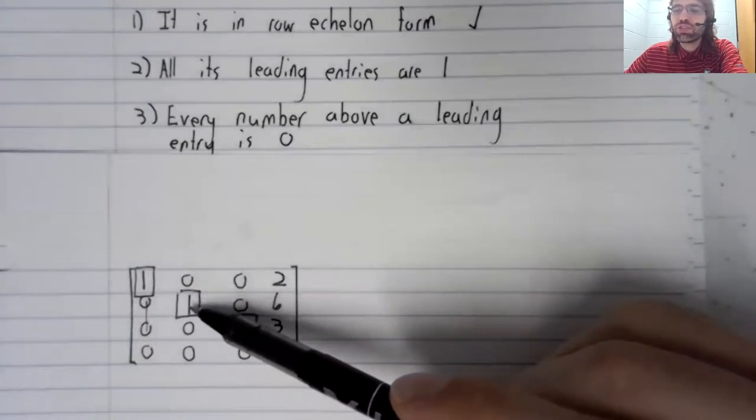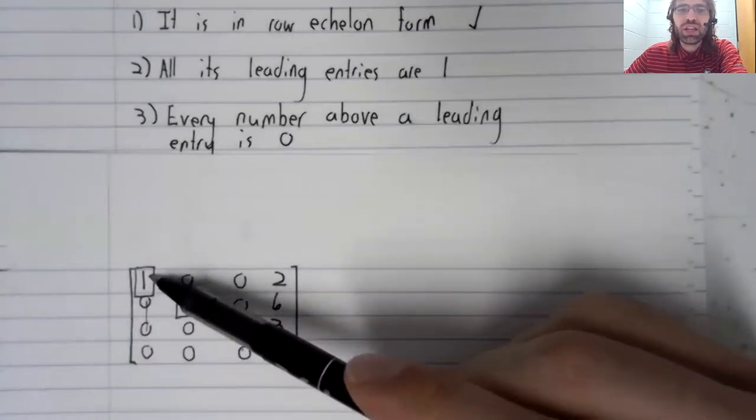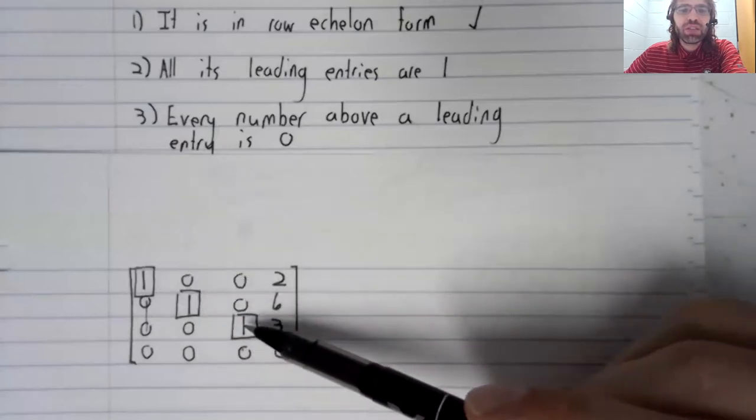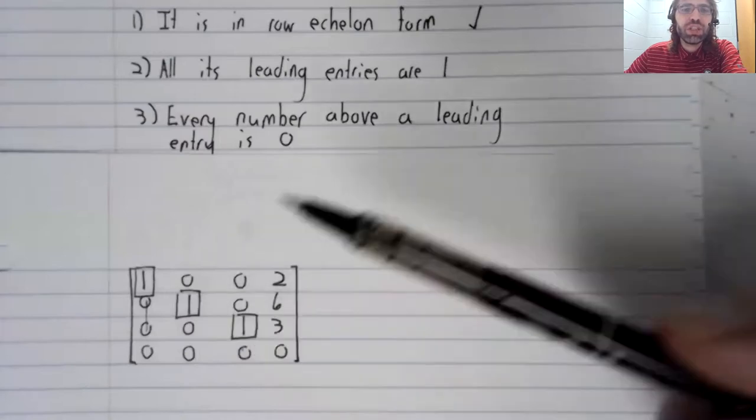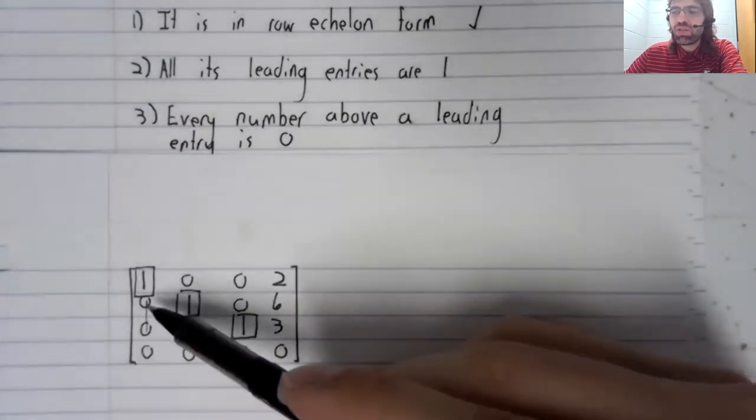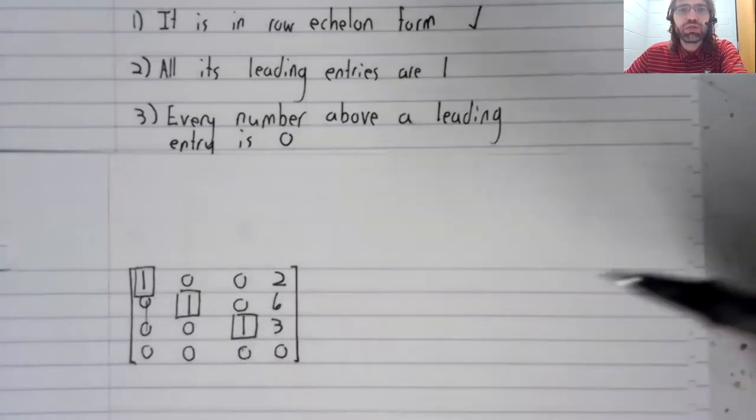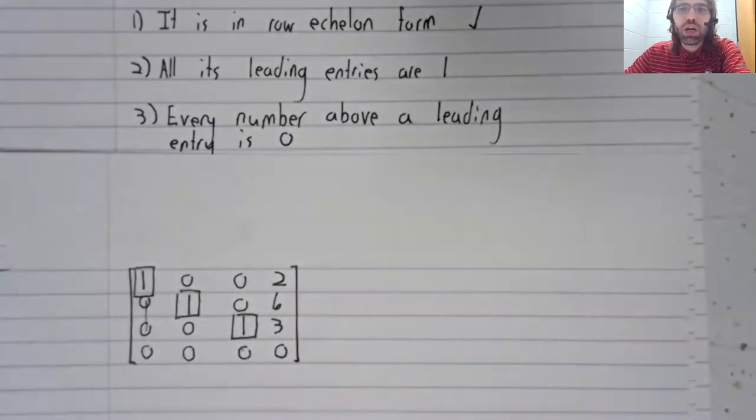I mean that this leading entry is to the right of this leading entry, and that this leading entry is to the right of this leading entry, is that that's equivalent to all of the entries below a leading entry being zero.